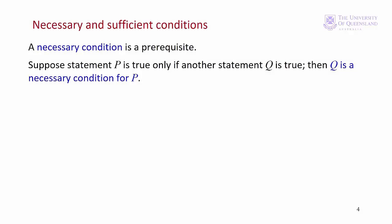Thinking about propositions and implications leads us to the concepts of necessary conditions and sufficient conditions. A necessary condition is a prerequisite. Suppose P is true only if Q is true, then Q is a necessary condition for P. This relationship is the one that we stated with our implication arrow: P implies Q. We can also state that as P only if Q, or if P then Q.